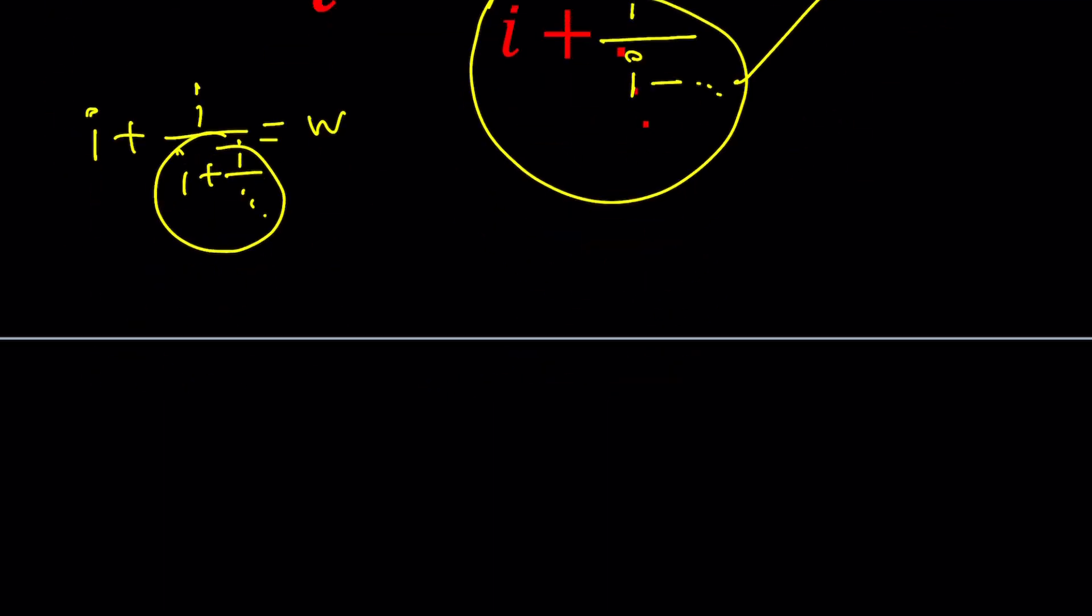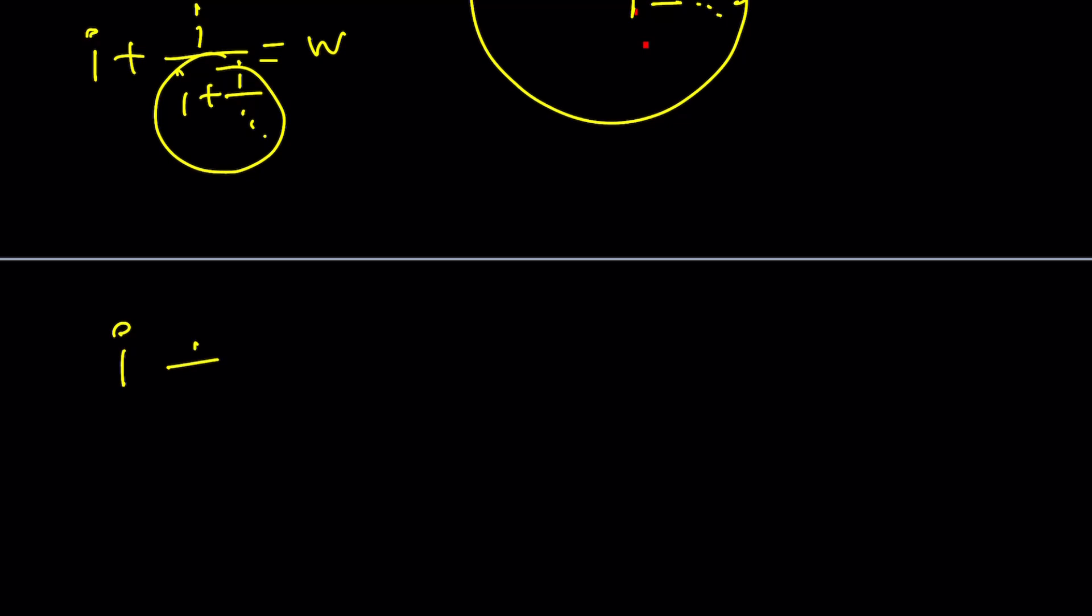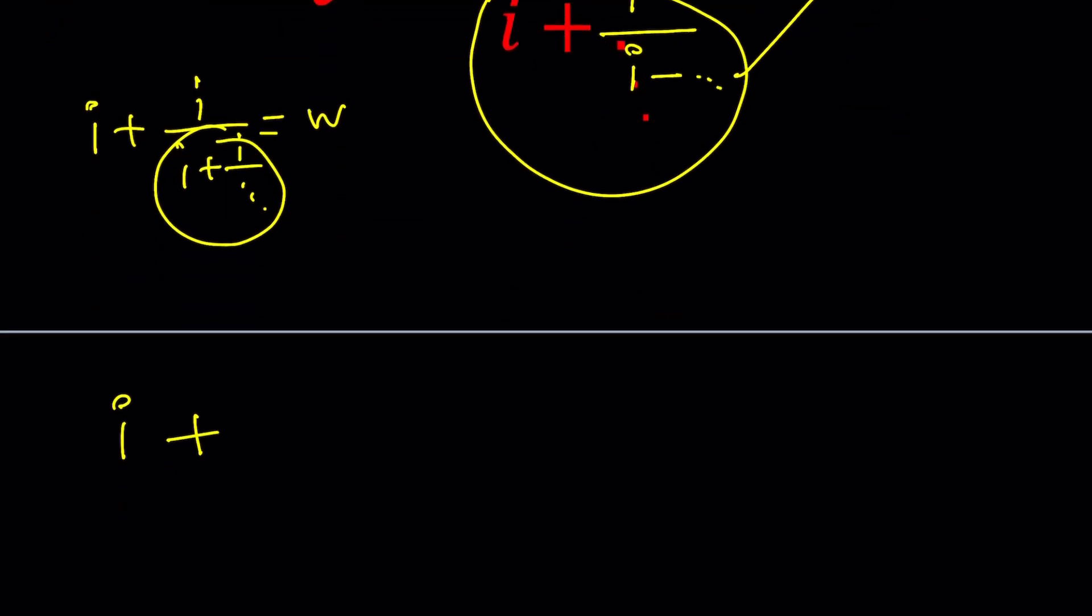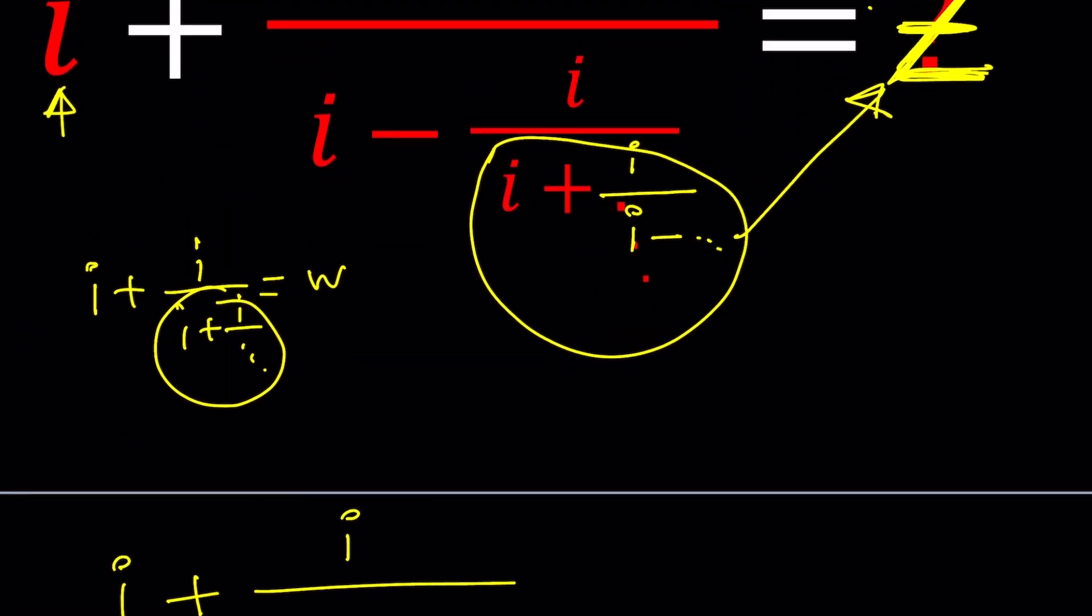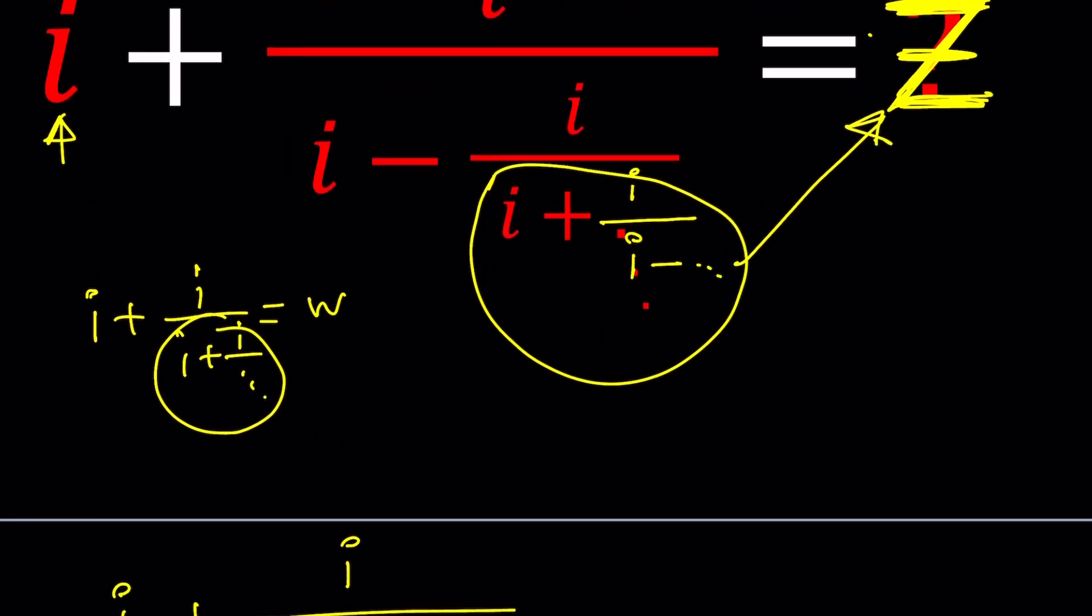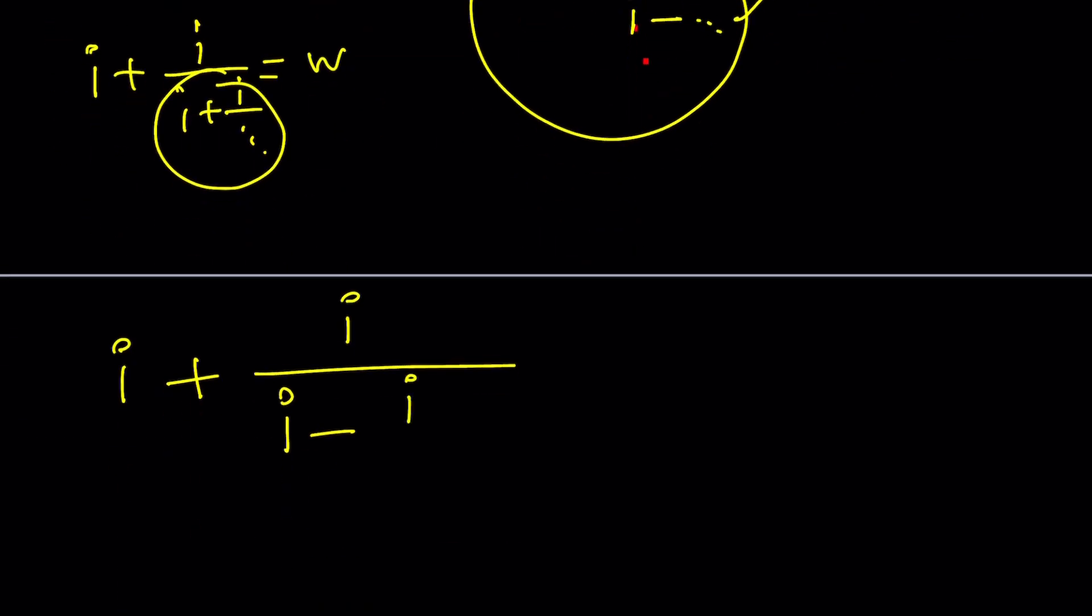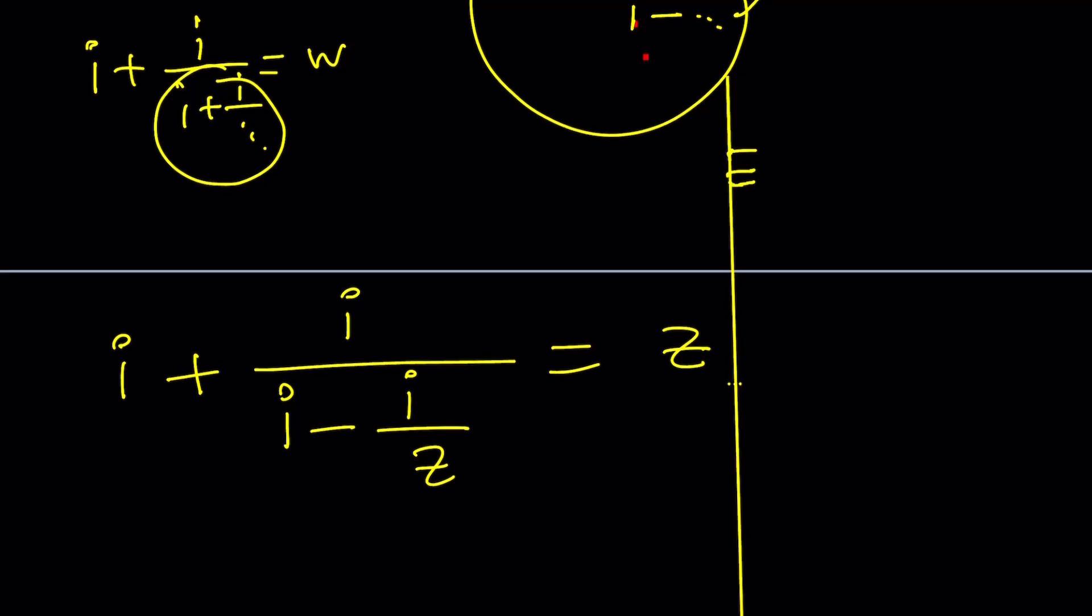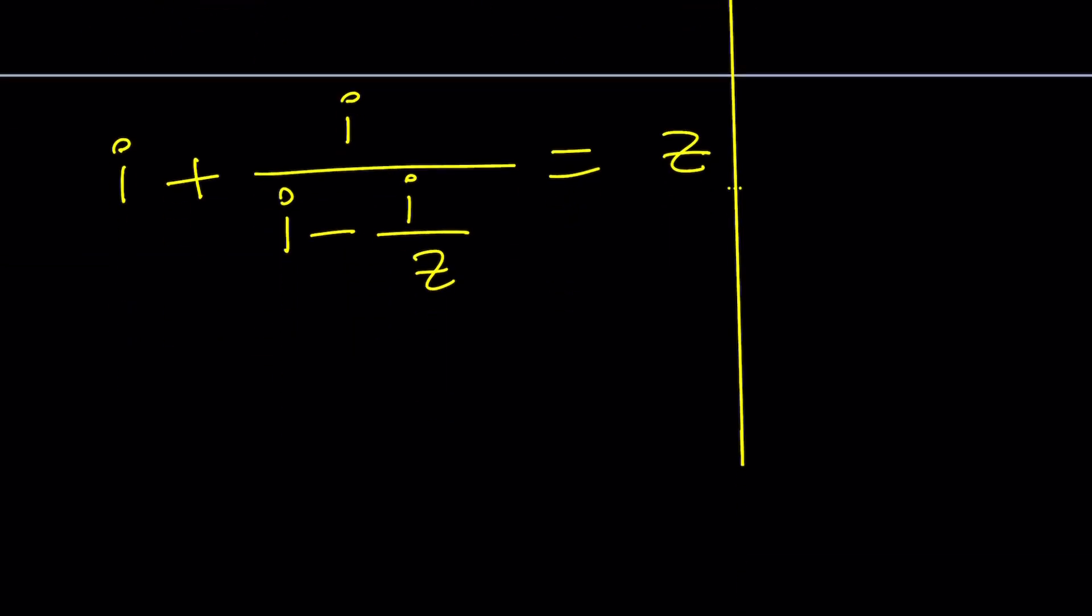I plus I over I minus I divided by Z equals Z. There you go. Once you do that the rest should be fairly easy. Like E Z. Anyway so this is my equation. How am I going to solve it?